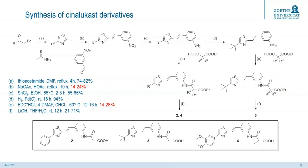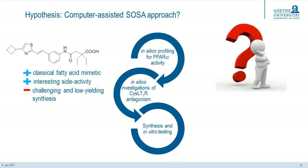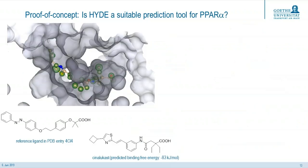So we want to synthesize only a small number of derivatives compared to lead structures in allocast. This leads us to our working hypothesis: can we address the promising side activity of this classical fatty acid mimetic in a computer-assisted SOSA approach to bypass the limitations of the synthesis? What do we need to do for that? It's actually pretty straightforward. First, we need an in silico investigation of the PPAR-alpha activity to improve it. We need an in silico investigation for the CysLT1 receptor antagonism. And in the last step, synthesize and test our compounds. We hope to achieve an optimized PPAR-alpha agonistic profile, diminish the activity on CysLT1, and get better time and cost efficacy.